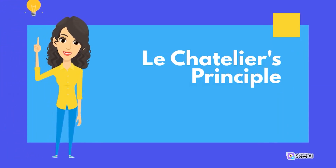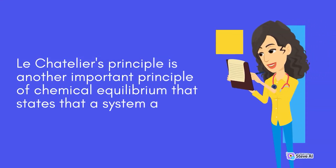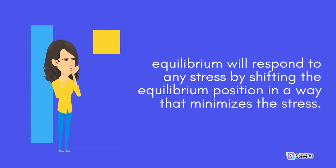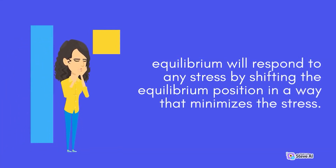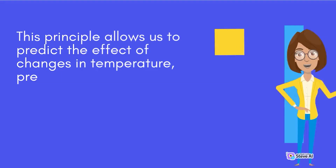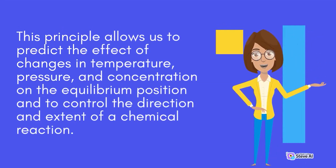Le Chatelier's Principle is another important principle of chemical equilibrium that states that a system at equilibrium will respond to any stress by shifting the equilibrium position in a way that minimizes the stress. This principle allows us to predict the effect of changes in temperature, pressure, and concentration on the equilibrium position and to control the direction and extent of a chemical reaction.